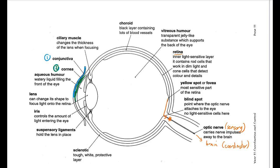The next part, shown in green, is the cornea. The cornea is a transparent window at the front of the eye — the part you can see through when looking straight at someone. Its main job is to refract or bend light so that it can be focused on the retina.